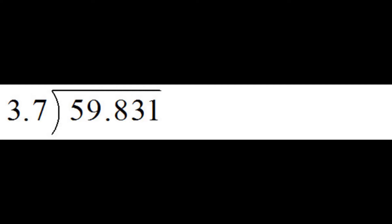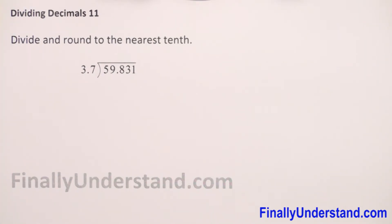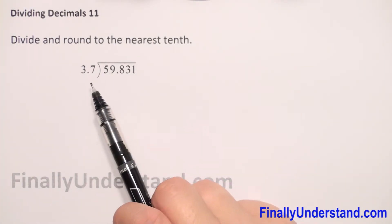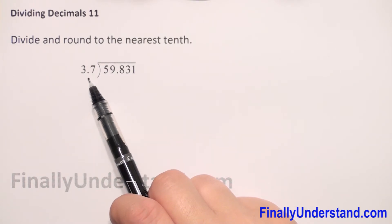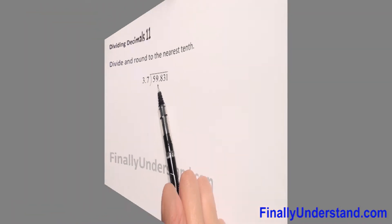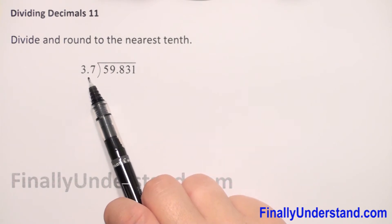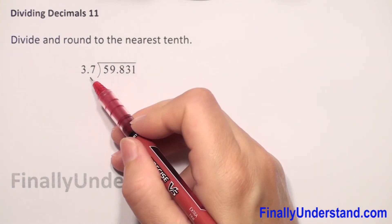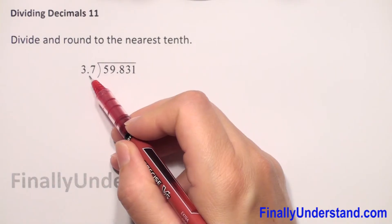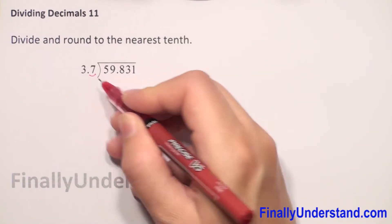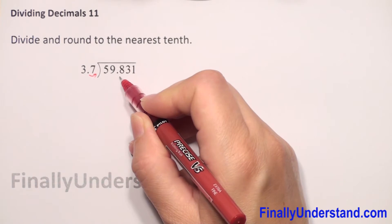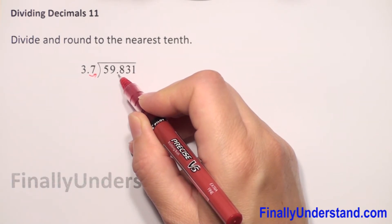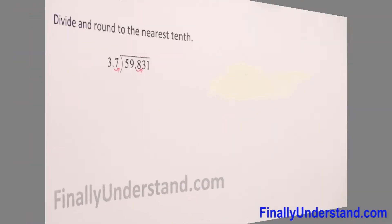We have two decimal numbers and we have to divide them, then round to the nearest tenth. The divisor and dividend are both decimal numbers. We know that the divisor cannot be a decimal number, so first we have to move the decimal point. We need to move it one digit to get a whole number, and we do the same with the dividend.